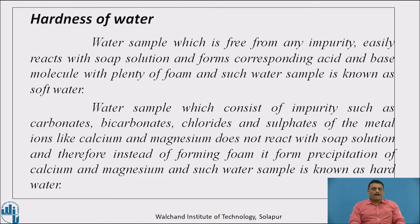First we will see what is meant by hardness of water. A water sample which is free from any impurity easily reacts with soap solution and forms corresponding acid and base molecules with plenty of foam — such water is known as soft water. Whereas a water sample which consists of impurities such as carbonates, bicarbonates, chlorides and sulphates of metal ions like calcium and magnesium does not react with soap solution, and instead of forming foam it forms a precipitate of calcium and magnesium salts — such water is known as hard water.